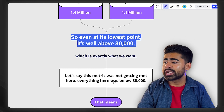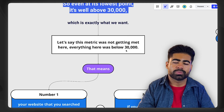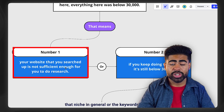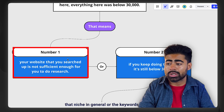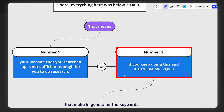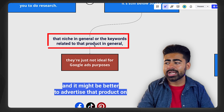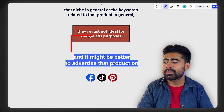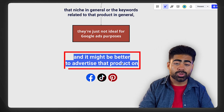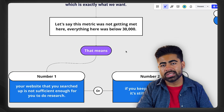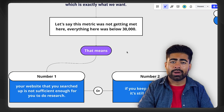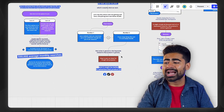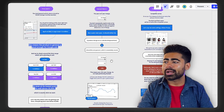But on the opposite side, let's say the metric was 28,000 — which is below 30,000. That means either the website you searched is not sufficient for doing keyword planner research, or if you keep doing searches and it's still below 30,000, then that niche or those keywords in general are not ideal for Google Ads purposes. It might be better to advertise that product elsewhere. If you consistently try different keywords, different variations, different URLs and it's still not leading anywhere, then that's probably a product issue or a niche issue — so keep that in mind and don't get too carried away trying to make a product work.